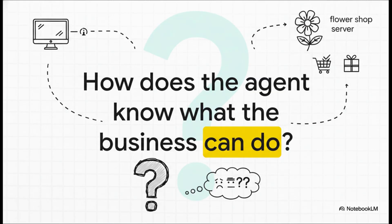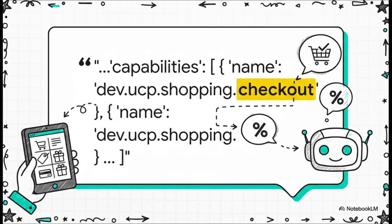When an AI agent connects to that flower shop server, how does it know what the shop can actually do — can it handle a checkout, can it apply a discount? The answer is pretty elegant: a standard file that acts like a digital menu of services. The business just lists its capabilities. You can see in this code snippet it's advertising that it supports things like checkout and discount. The agent reads this file and instantly knows exactly what actions are possible.